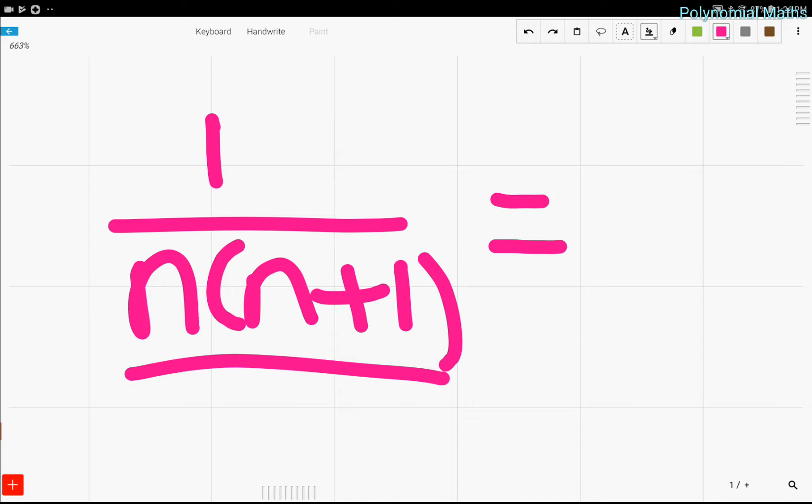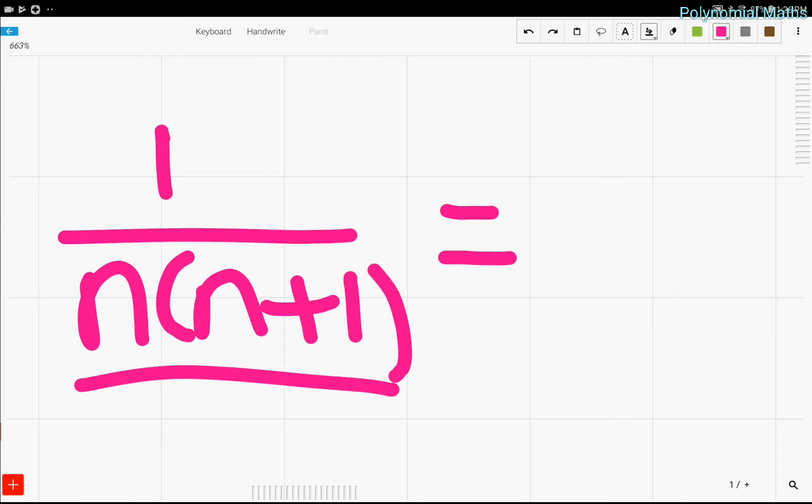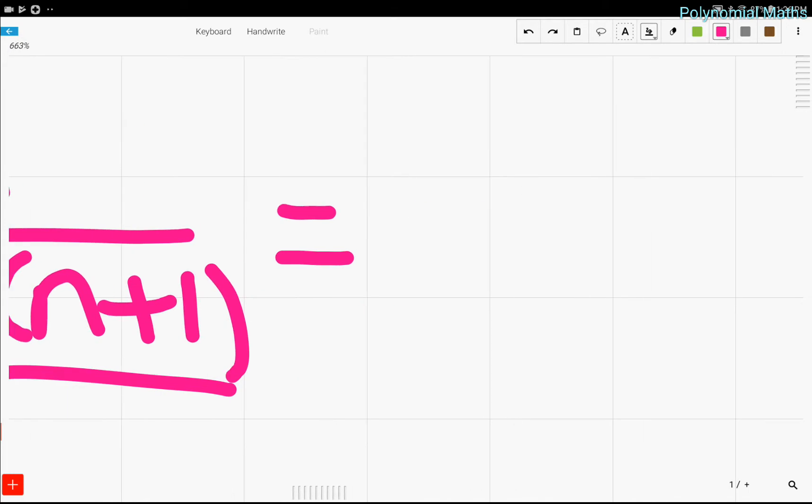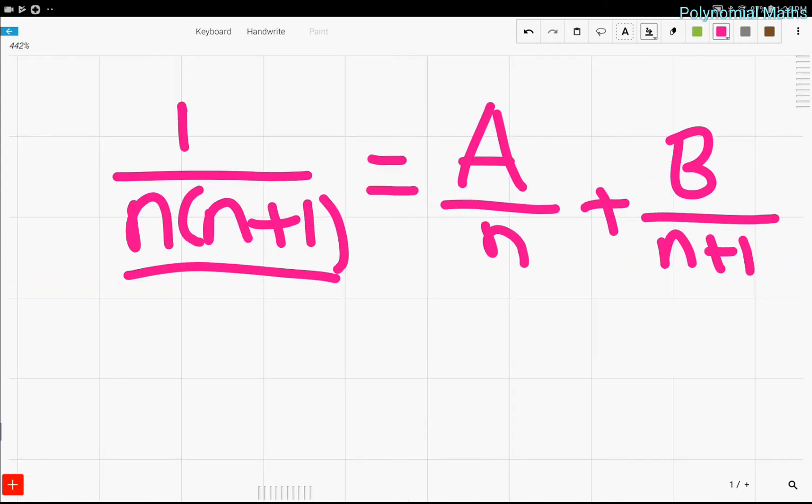So, what we're going to do is split this fraction up into two other fractions. Now, it doesn't always have to be two other fractions, but let's just try to split it up. And what makes, what sounds reasonable is if we put one fraction with denominator n, and another fraction with denominator n plus 1. Because when we add them together, they'll have to have a common denominator of n times n plus 1.